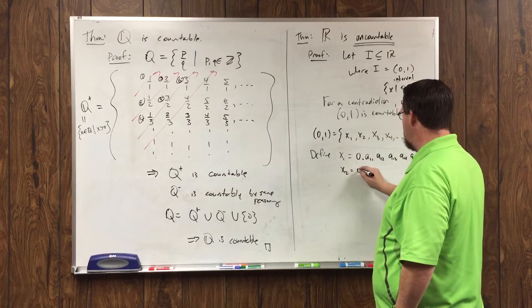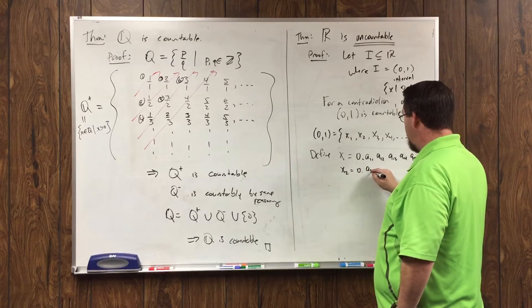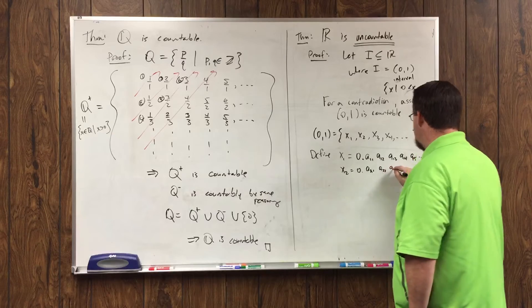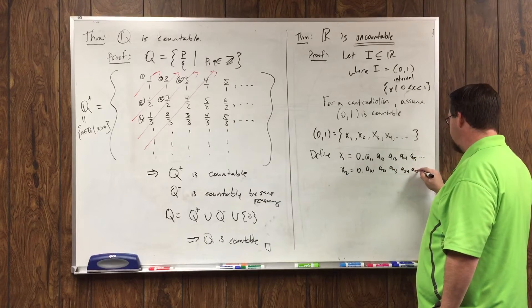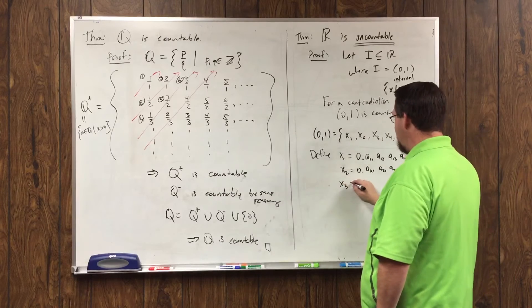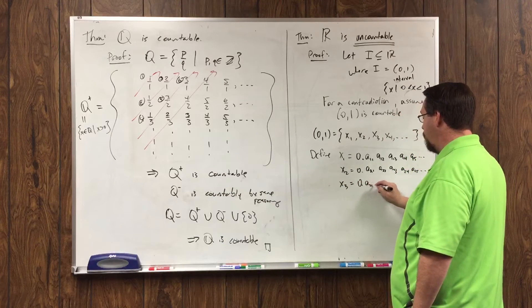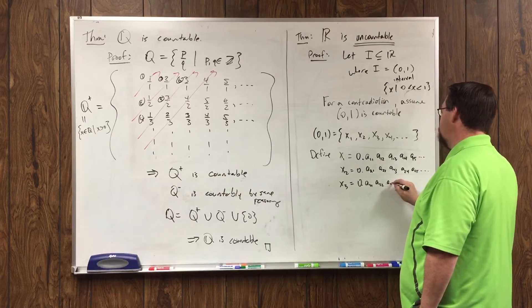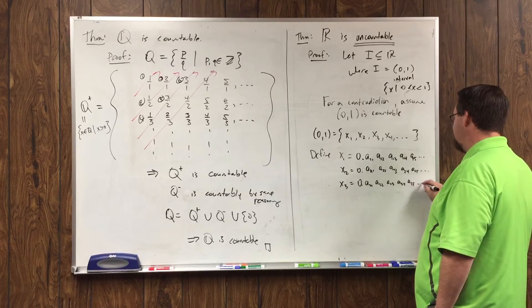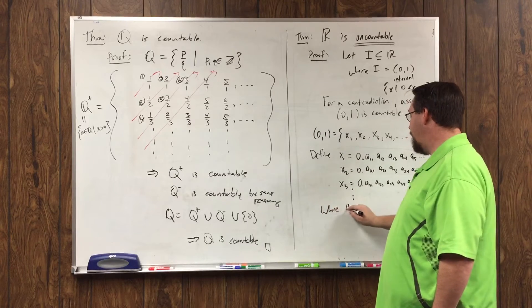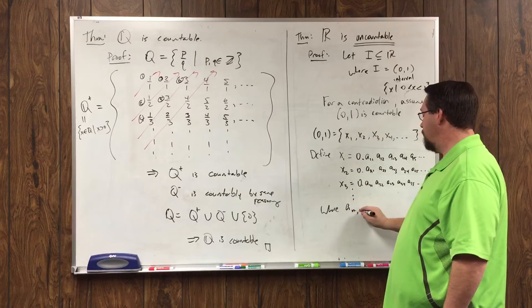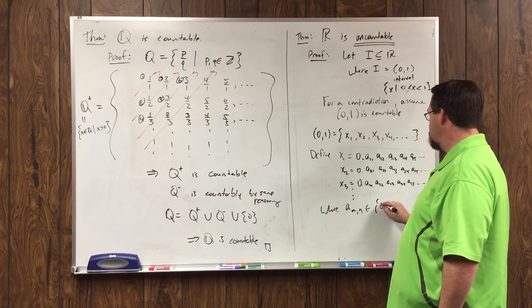x2 is 0 dot a21, a22, a23, a24, a25, and so on. x3 is 0 dot a31, a32, a33, a34, a35, and so on. And we'll just keep going. So where a sub mn is an element of {0, 1, 2, up to 9}. It's one of the digits.